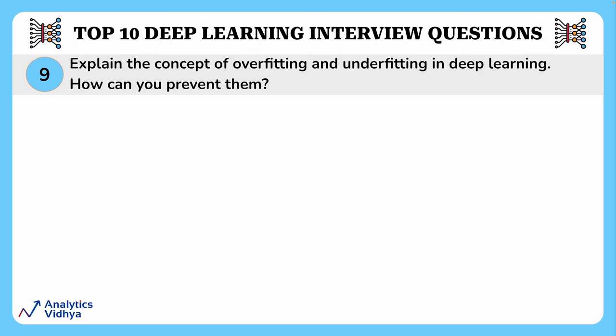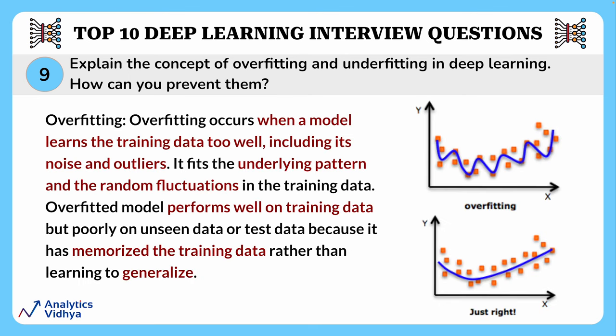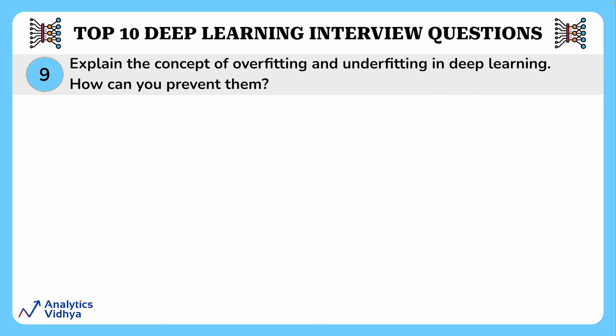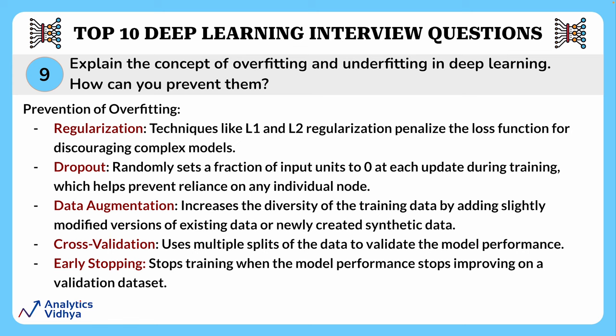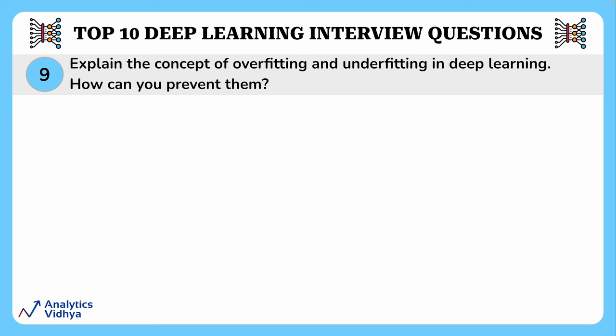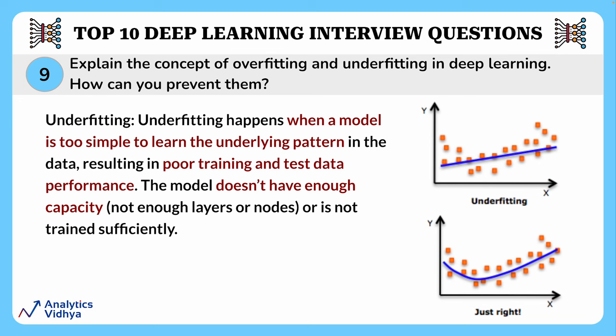The next question asks about the concepts of overfitting and underfitting and how to prevent them. Overfitting occurs when a model learns from the training data too well, including its noise and outliers. Such a model performs well on training data but poorly on unseen test data because it has memorized rather than generalized. Overfitting can be prevented by techniques like regularization, dropout, data augmentation, and early stopping.